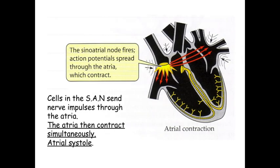The first thing that happens is the SAN releases a wave of excitation that spreads over both atria, causing the atria to contract simultaneously — at the same time. This is atrial systole. By causing the atria to contract at the same time, this causes the blood pressure inside the atria to be higher than that of the ventricles, so blood is forced from the atria into the ventricles through the atrioventricular valve, which is now open.